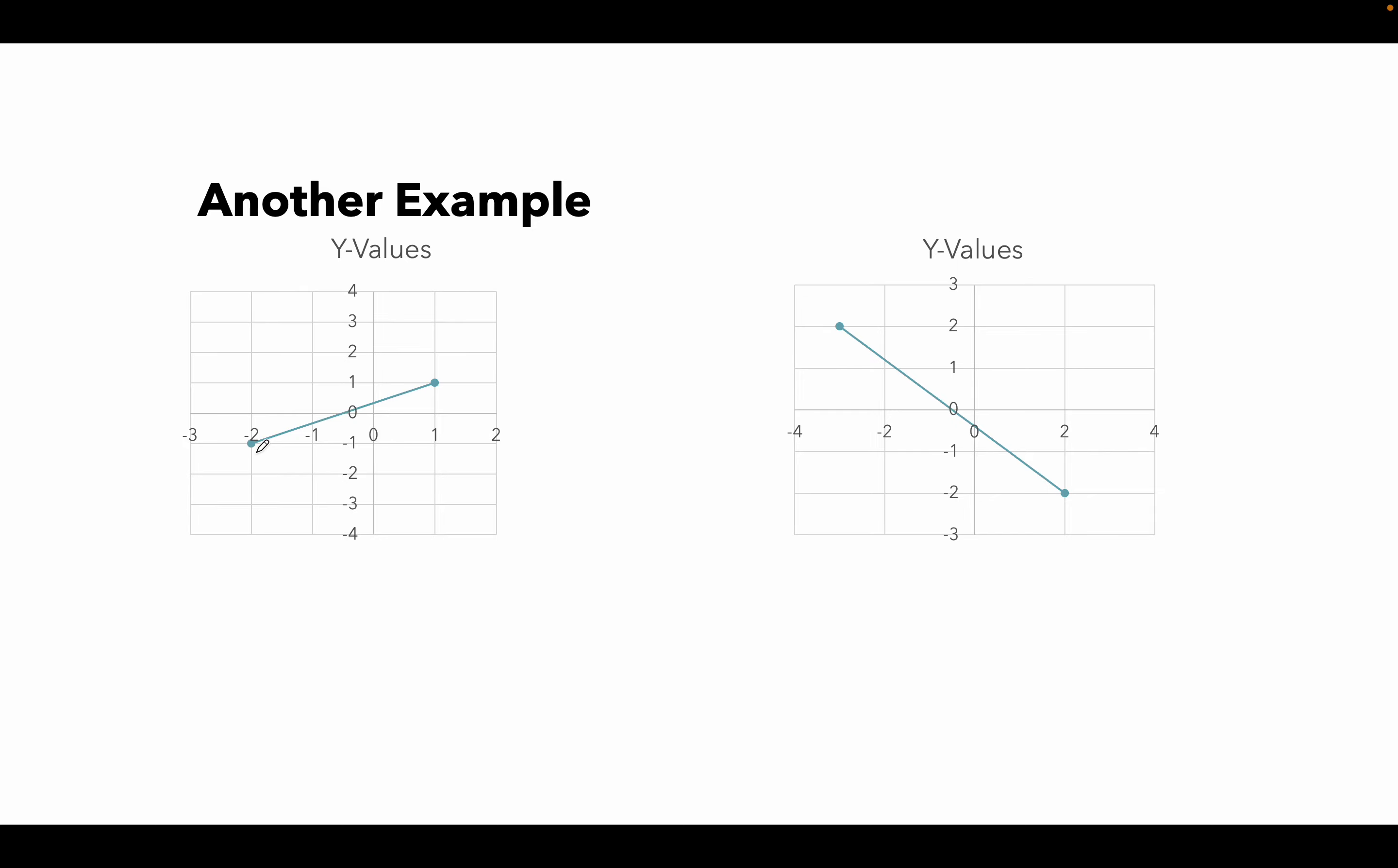Let's try these examples. Looks like I've been given a point that is negative 2 and negative 1. X value is negative 2, Y value is negative 1. Next point is 1 and 1. So my rise is 1, 2, and my run is 1, 2, 3.